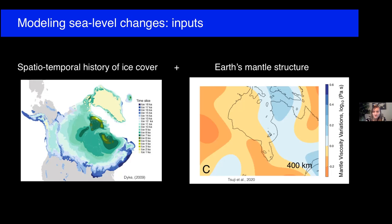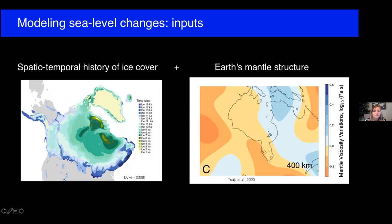To answer this question — to timestamp this Cree oral history — we modeled sea level changes in James Bay associated with deglaciation. Our modeling requires two inputs: a spatiotemporal history of ice cover, and a model of earth's 3D viscoelastic structure. The plot shows estimates of the aerial extent of the Laurentide ice sheet that covered Canada at different time slices. We performed 10 simulations using published ice history models as well as earth models generated from seismic tomography models. The plot shows mantle viscosity variations in log10 Pascal-seconds at a depth slice of 400 kilometers from one of these earth models. For the simulation results I'll show, we use the ice history model ICE-6G and inferences of mantle viscosity from the seismic tomography model S40RTS.